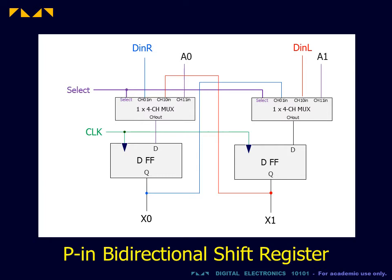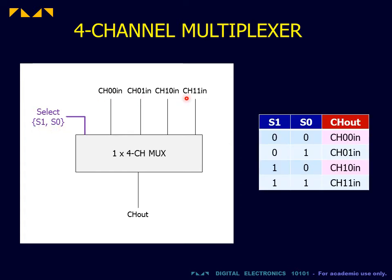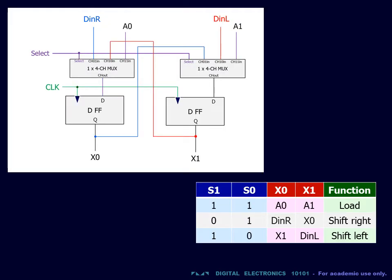We now wish to design a parallel-in bidirectional shift register. In this case, we now have three competing inputs for the D flip-flop: one for the right shift, one for the left shift, and one for the parallel load. In order to channel these three inputs, we require a four-channel multiplexer. The four-channel multiplexer has two select lines, called S1 and S0, which together select one of the four input channels. When S1 is 1 and S0 is 1, the parallel input is loaded. When S1 is 0 and S0 is 1, the load is disabled and the register shifts left.